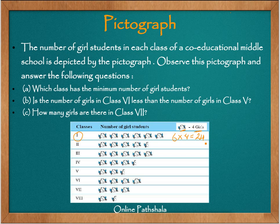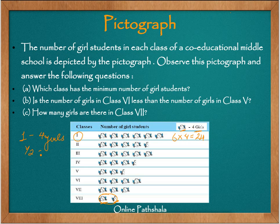Now let's extract information from this pictograph. Which class has the minimum number of girl students? The pictures are fewest in class 8. But how do we extract the exact number? There is one complete symbol and one half symbol. One complete object represents 4 girls, so half represents 2 girls. Therefore class 8 has 2 girls.